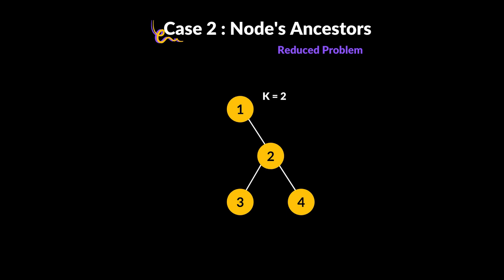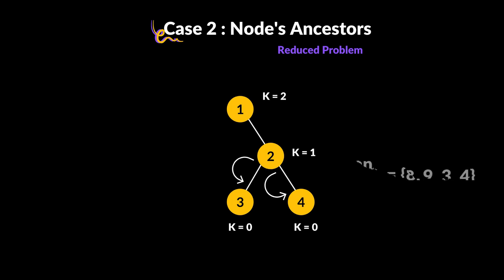For ancestor node 1, the distance from 5 to 1 is already known. With K equal to 2 at node 1, we reduce K by 1 as we go to nodes 2, then to nodes 3 and 4 where K becomes 0. K equal to 0 means we have traveled the full distance, so we add 3 and 4 to our answer along with 8 and 9.